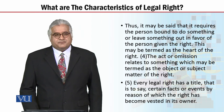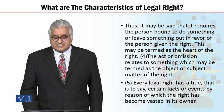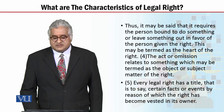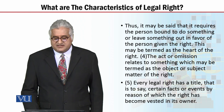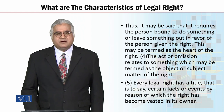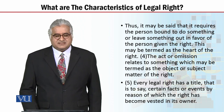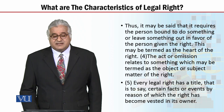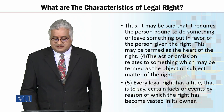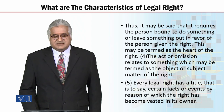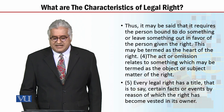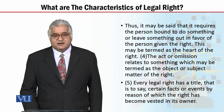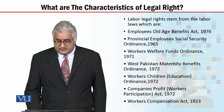The fourth characteristic is: the act or omission relates to something which may be termed as the object or subject matter of the right. And the fifth characteristic is: every legal right has a title — that is to say, certain facts or events by reason of which the right has become vested in its owner.